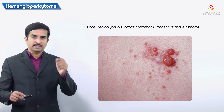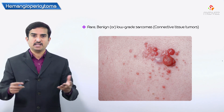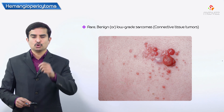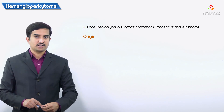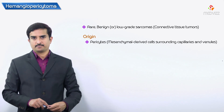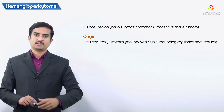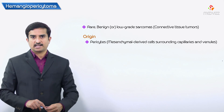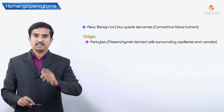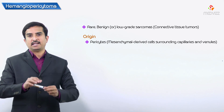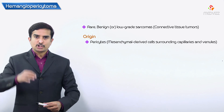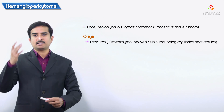Let me discuss one of the rare vascular neoplasms - hemangiopericytoma. These are rare benign or low-grade sarcomas, meaning connective tissue tumors originating from the pericytes. Pericytes are mesenchymal-derived cells which surround the capillaries as well as venules. The tumor originating from these pericytes is called hemangiopericytoma.